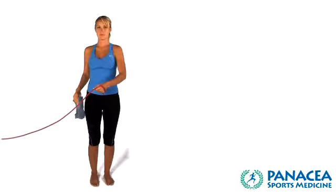The first thing you want to do is tie a knot at the end of the tubing and fixate the elastic tubing into the door jamb. Make sure the door stays closed. Then stand away from the doorway.